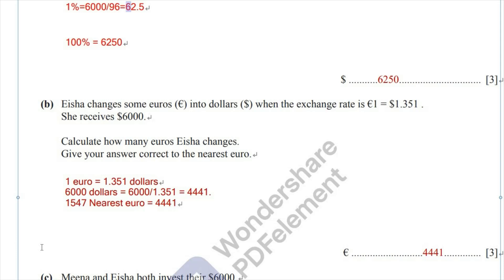Question 5B: Isha changes some euros into dollars when the exchange rate is 1 euro equals 1.351 dollars, and she received $6,000. Calculate how many euros Isha changes. Give your answer correct to the nearest euro. So 1 euro equals 1.351 dollars.